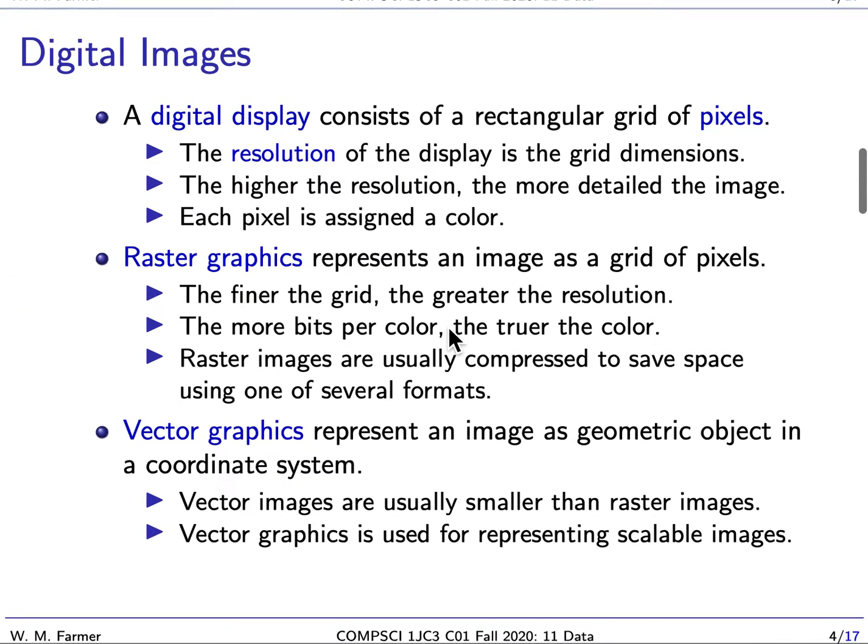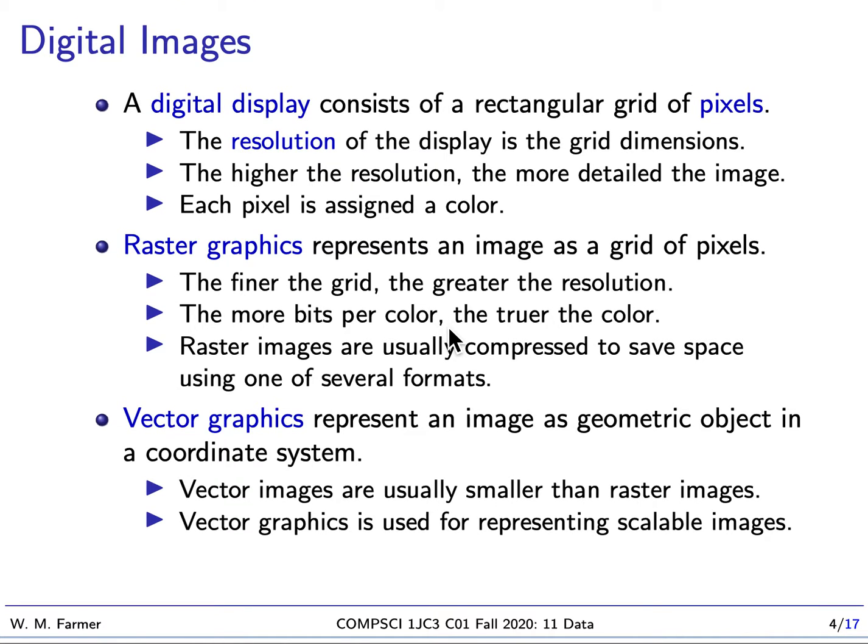Let's start with digital images. Digital images are images that are captured and stored digitally. That means essentially they're stored as a sequence of zeros and ones. A digital display, as you can see on the computer display, consists of a rectangular grid of pixels. Each pixel is a point in the grid and this point basically holds a bit of color. The resolution of the display is the grid dimensions, and the higher the resolution the more detailed the image because the more pixels you have and each pixel is assigned a color.